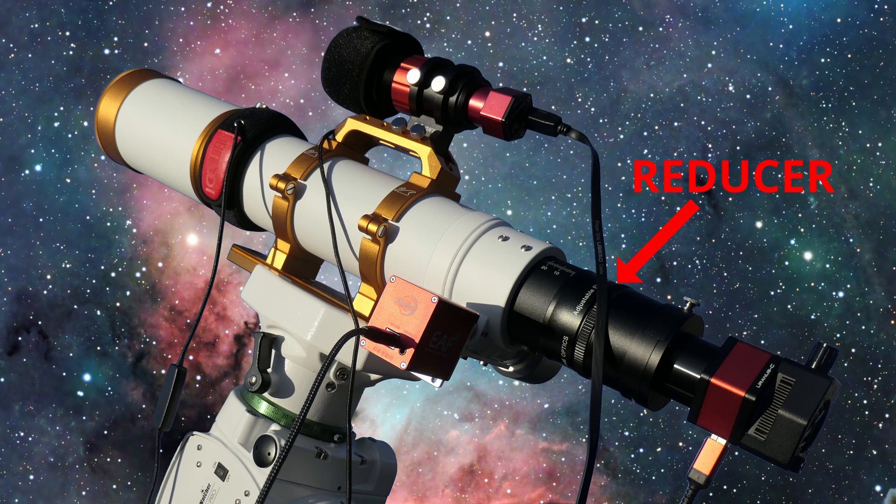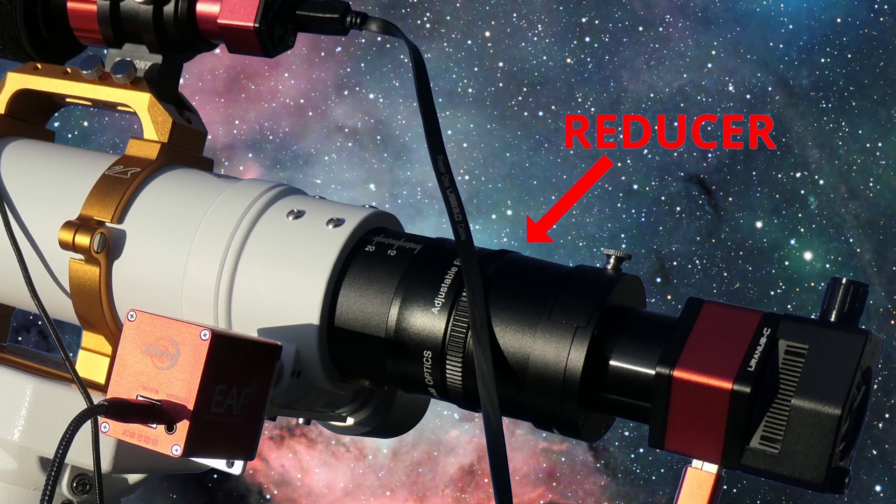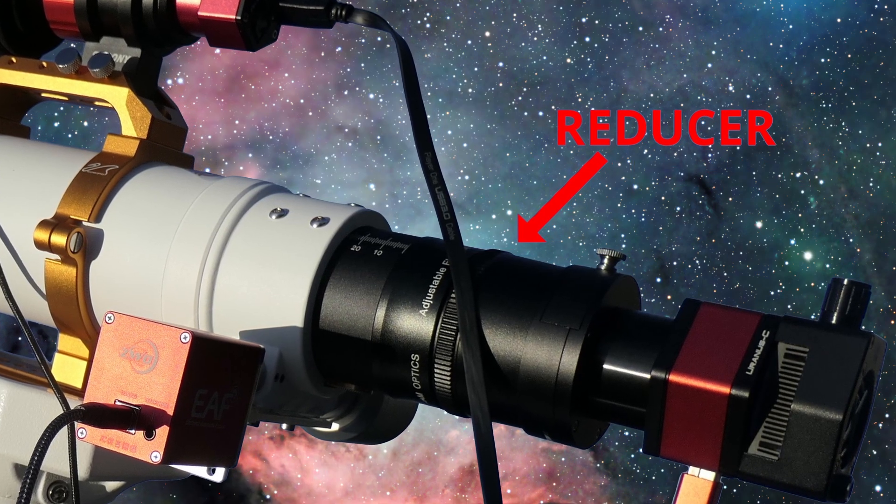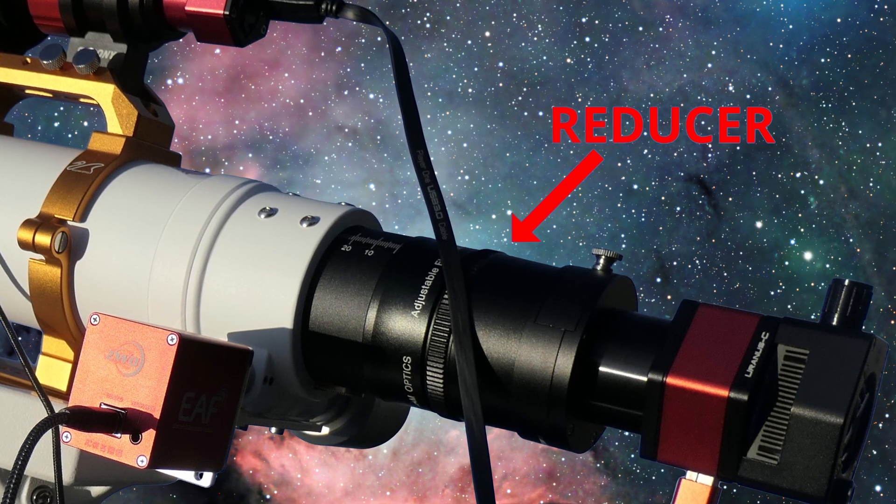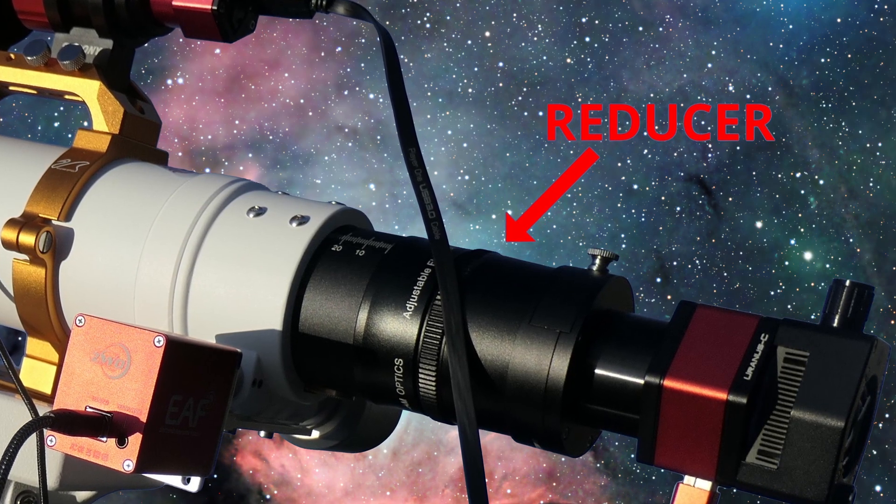Did you ever consider how weird it is that a reducer which physically lengthens a telescope by several centimeters actually shortens its focal length? Or for that matter, how a device only a few centimeters long, a Barlow lens, can actually double, triple, or quadruple the focal length of a telescope?